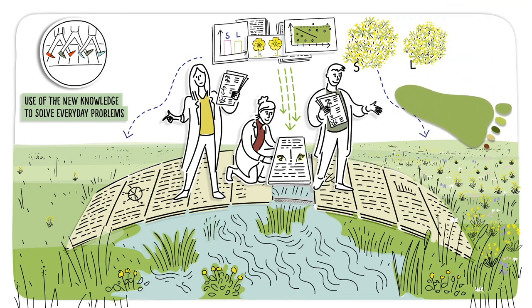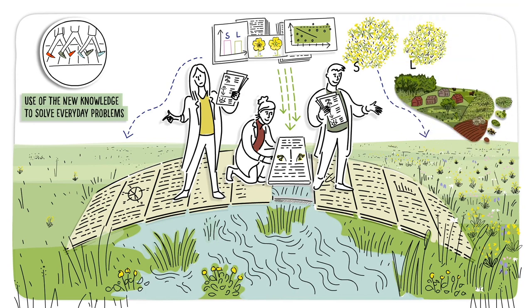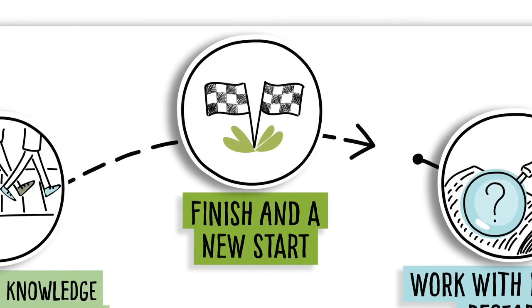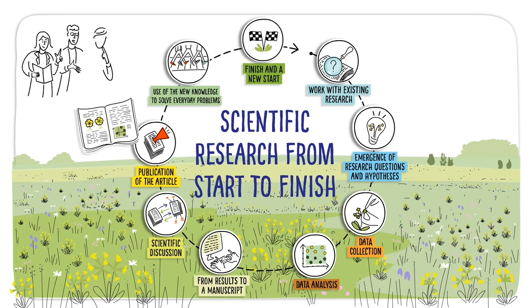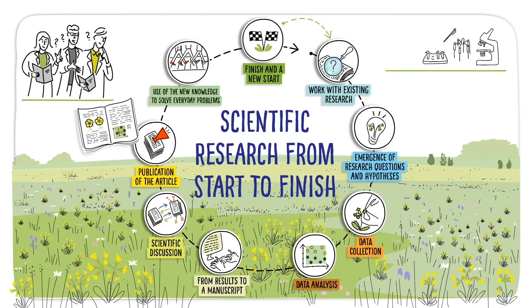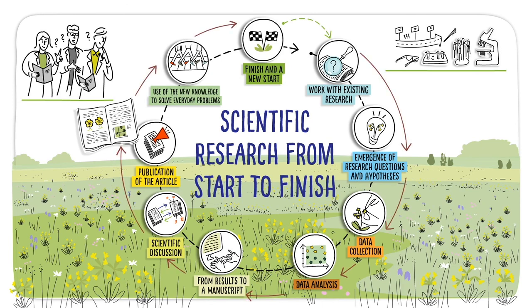This knowledge helps us take steps for maintaining biodiversity, before it's too late. Finish and a new start. The published research article is often an important input for the research community in the emergence of new research questions, which creates a basis for new scientific experiments. And so, the cycle of doing science continues, from a new start to the next intermediate finish.